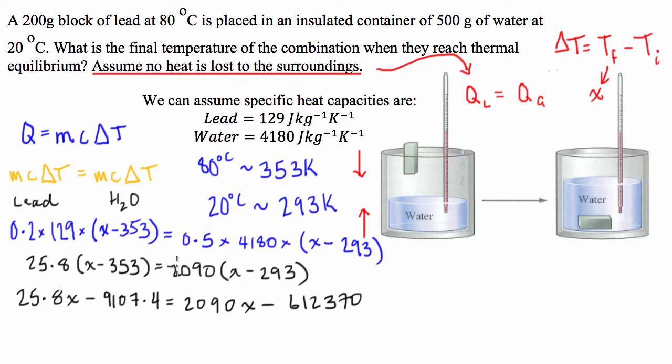Now all I'm doing here, this is not physics anymore, this is just simple algebra that you would learn when you're 13 I guess years old. So we combine our like terms on either side of the equality, so I'm going to move just my digits over to the left and I'm going to move my X values to the right, and I get 612,370 minus 9107.4 is equal to 2090X minus 25.8X.